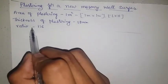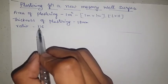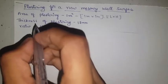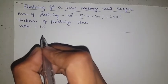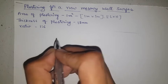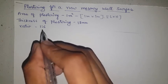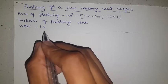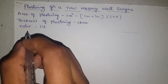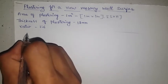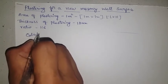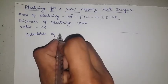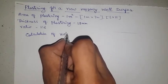The mix ratio is 1:6 — cement and sand. Friends, no calculation of volume next. The quantity of cement, quantity of sand — now calculation of volume of mortar, calculation of volume of mortar.